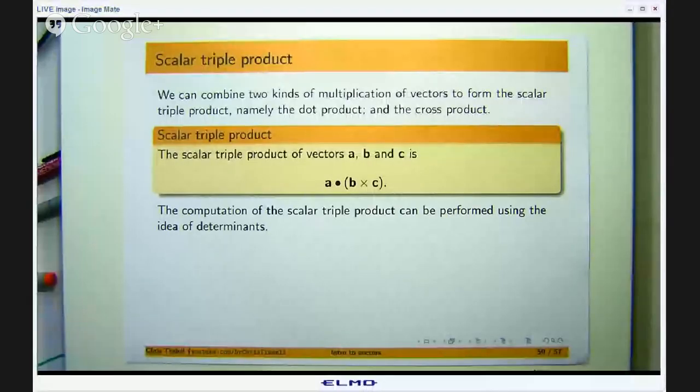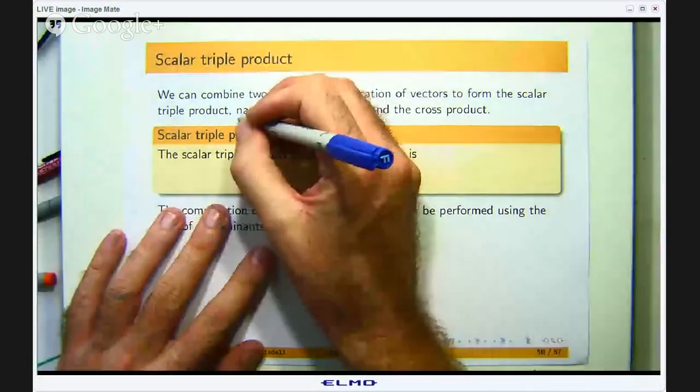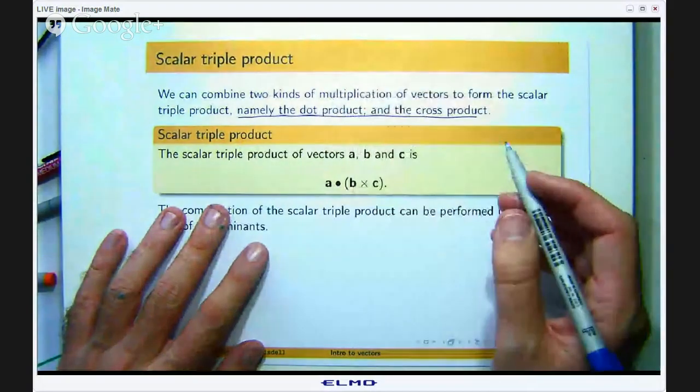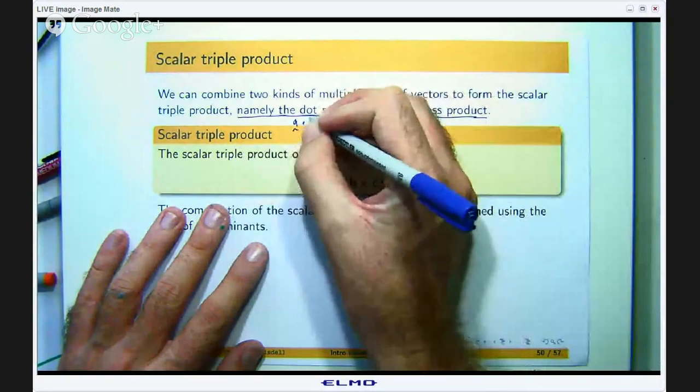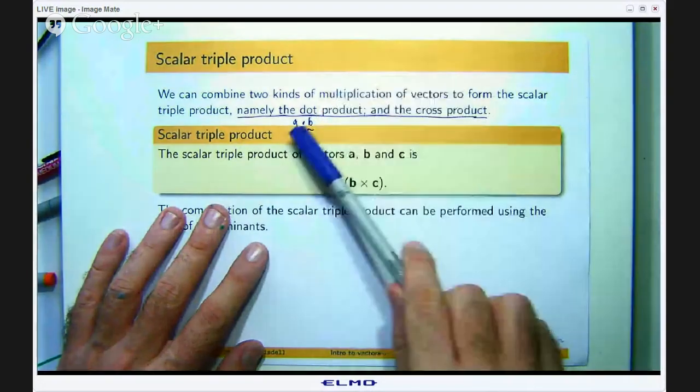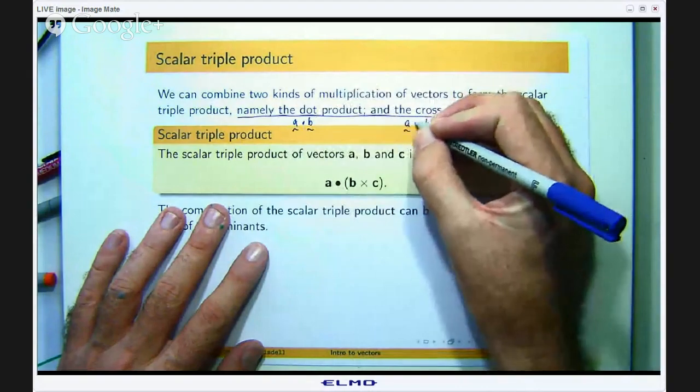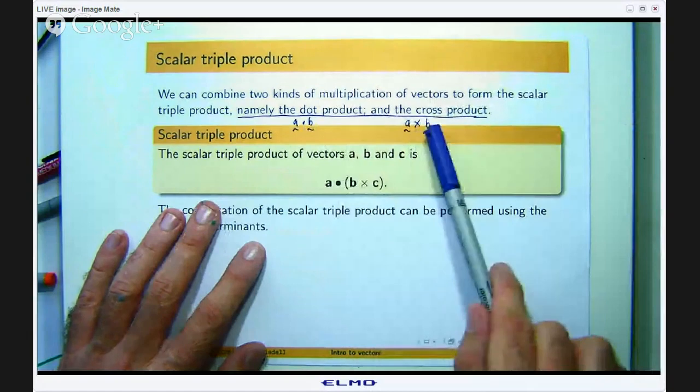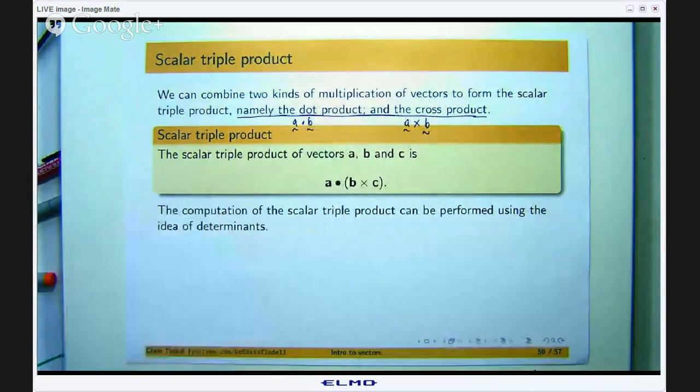Okay, the scalar triple product. We are going to combine the dot product of two vectors with the cross product of two vectors. So if we have two vectors a and b, this is the dot product and the cross product, so a crossed with b is just written here. Now if you need some refreshing on what these operations are and their interpretation then you can see some of my other videos.